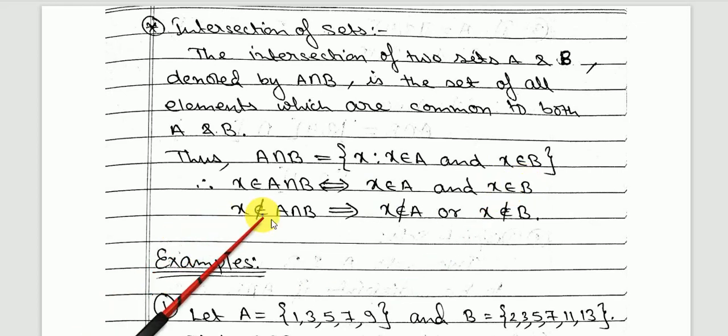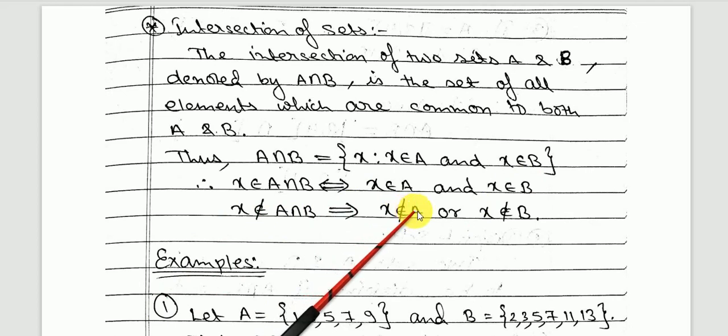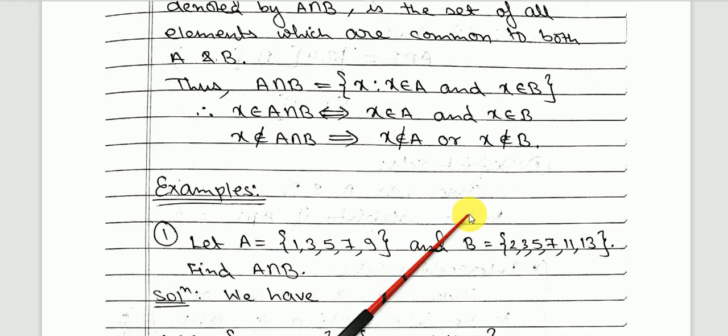And if it says that x is not in the intersection, it means that x is either not in A or not in B.